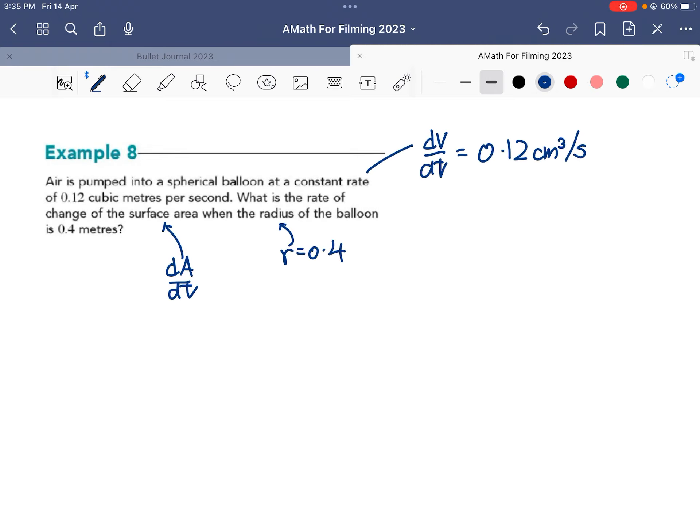Air is pumped into—so 'into' means that the volume is increasing at a rate of 0.12 cm³ per second. So I have dV/dt. Now what they want us to find is the rate of change of the surface area—so rate of change of area with respect to time when the radius is 0.4 meters.